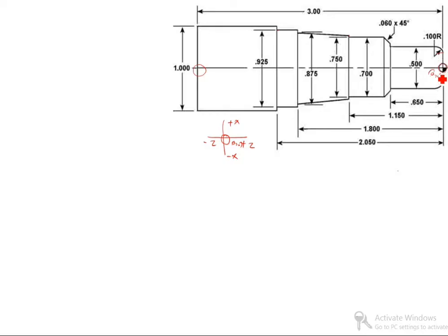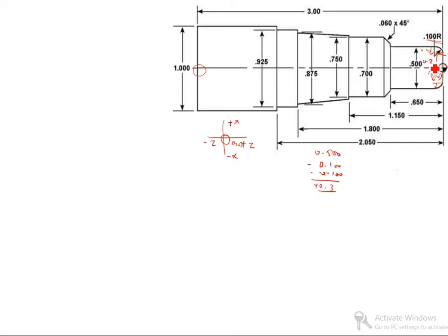Up to here we have to calculate. First, point 0.500 is given. 'OR' means radius, so we have to minus this: 0.100. This portion is 0.100, so you do minus 0.100 minus 0.100. The answer is 0.300, so this value is 0.300. First we see x, then after that you have to write the program — it is very easy.